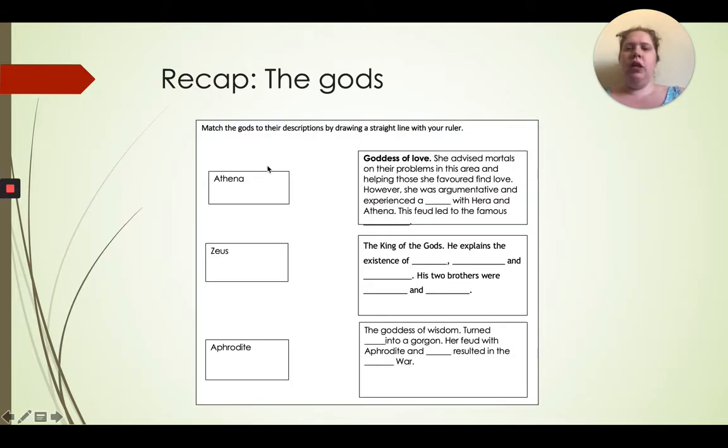I want you to match the gods Athena, Zeus, and Aphrodite to one of the three descriptions and then fill in the gaps. Just so you know, I've only just noticed, there is one gap at the bottom of the first box and it's really hard to see. Goddess of love, she advised mortals on their problems in this area and helping those she favored find love. However, she was argumentative and experienced a [feud] with Hera and Athena. This feud led to the famous [Trojan War].